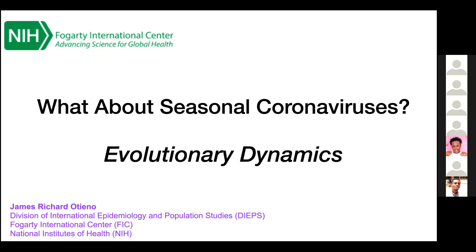He's also part of the training workforce development technical working group with PHAGE. He completed his PhD with the Open University in 2019, based at the Cambridge Wellcome Trust. Today, James is going to be talking to us about seasonal coronaviruses — the title of his presentation is 'What About Seasonal Coronaviruses?' I'm going to hand over to James, and we'll be taking questions at the end, or if he's okay with being interrupted midway, he'll let us know.